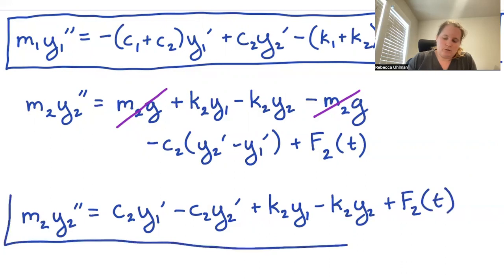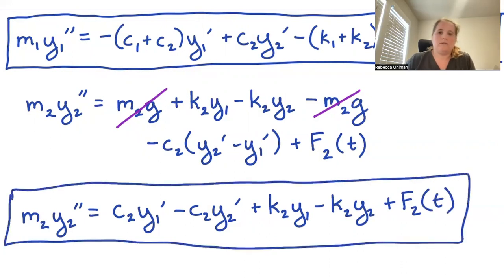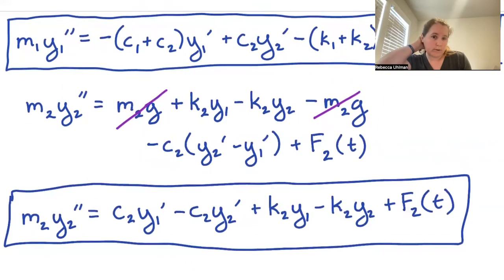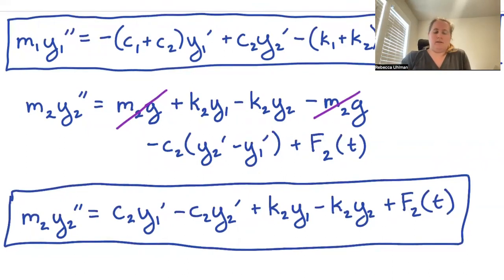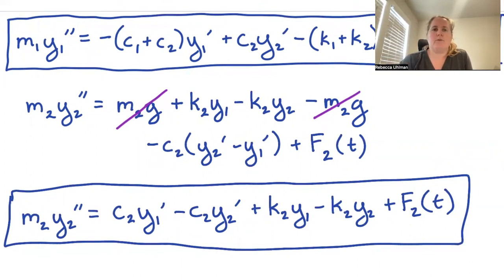Putting these two finalized equations together, we have a system of two second-order equations for our double spring-mass system.